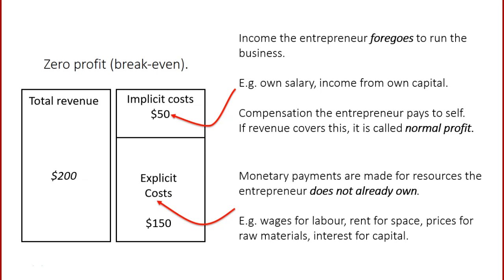The entrepreneur would need to be compensated for this lost income experienced by running their own business. The business should generate sufficient revenue not just to cover the explicit costs but also to compensate the entrepreneur for what they've foregone by not doing something else instead. If the revenue from the business covers those implicit costs, we call that the firm's normal profit. So if the firm is breaking even, the entrepreneur is being compensated for their time, effort, and the risks they take to run the business — they are not starving.